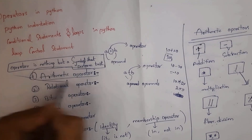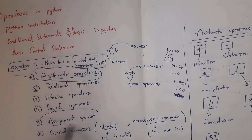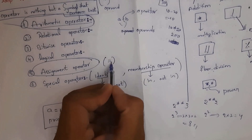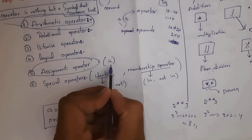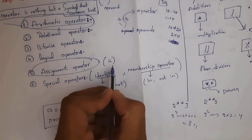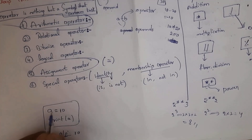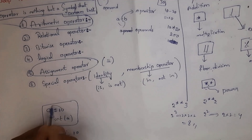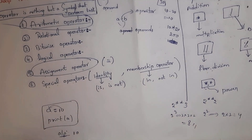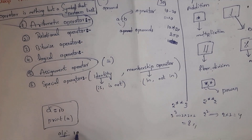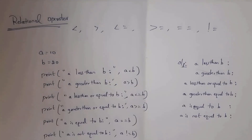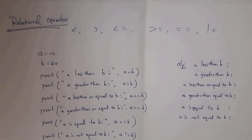The assignment operator is represented by the equals symbol (=) and is used to assign values to variables. For example, a = 10 assigns value 10 to variable a. When executed, the program outputs 10.